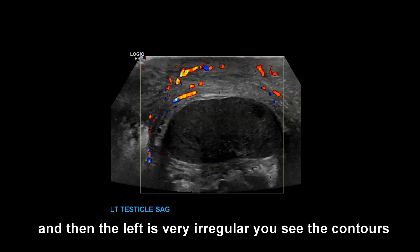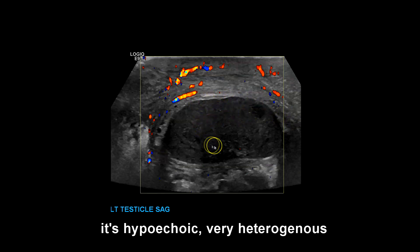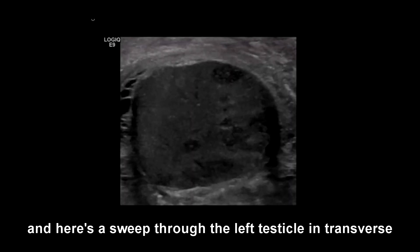The left testicle is very irregular. You can see the contours of it are irregular. It's hypoechoic, very heterogeneous, with a lot of scrotal wall thickening.